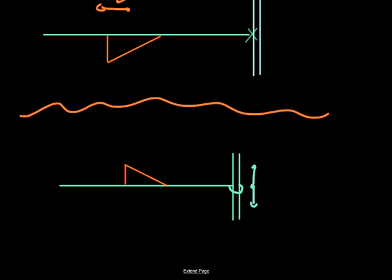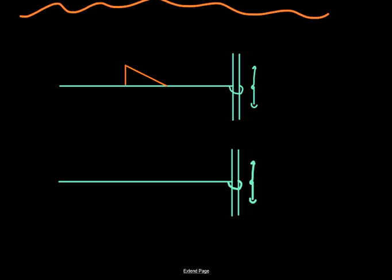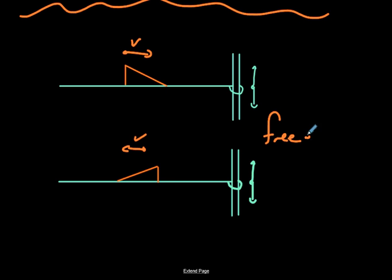Although it's on the same side, the part that hit first is the part that comes out first. This was our wave on the way into the reflection, and this is our wave on its way back out. We call this free end reflection.